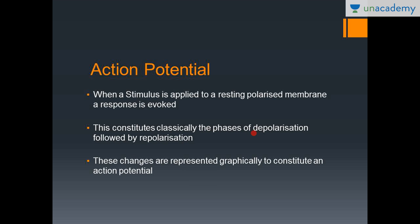The action potential classically consists of a phase of depolarization followed by repolarization. At rest, the membrane is negatively charged on the inside and positively charged on the outside. On depolarization, this reverses — the membrane becomes positive on the inside and negative on the outside. This depolarization is transient, and repolarization then shifts it back to normal.